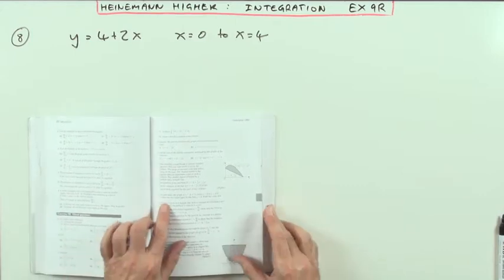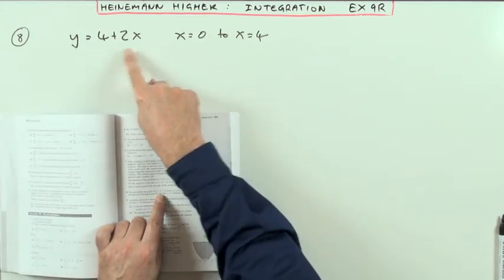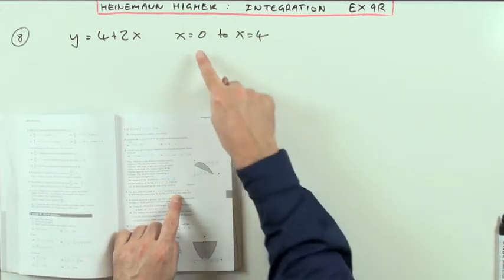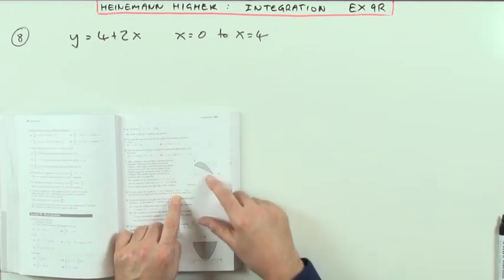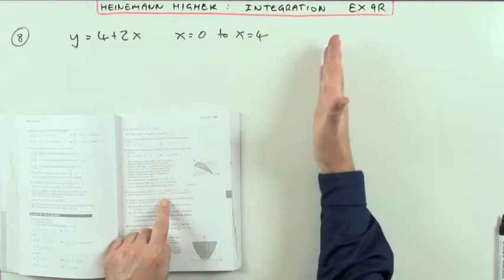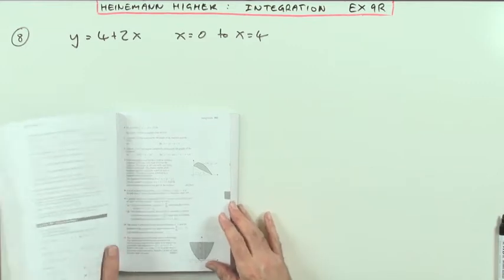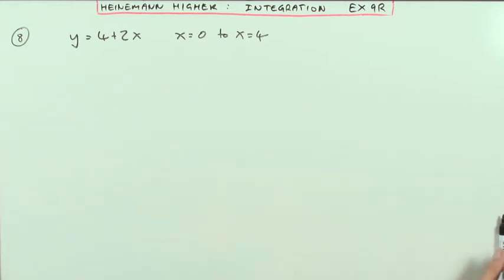The area under the graph, this graph here, which is simply a straight line between these two x-coordinates, is divided into two equal parts by some other line, x equals k. What's the value of k that does that?